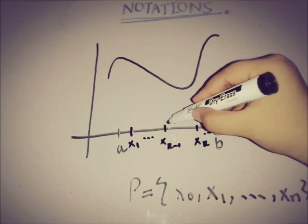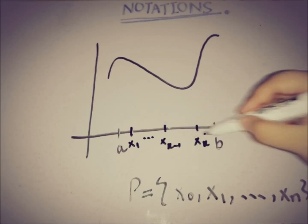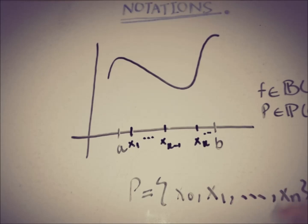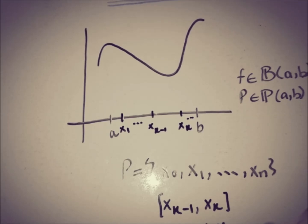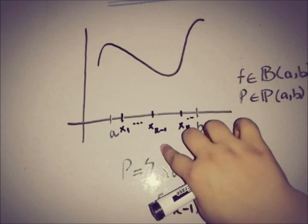Now we will discuss the k-th subinterval. The k-th interval can be written as x taken between x_{k-1} and x_k.